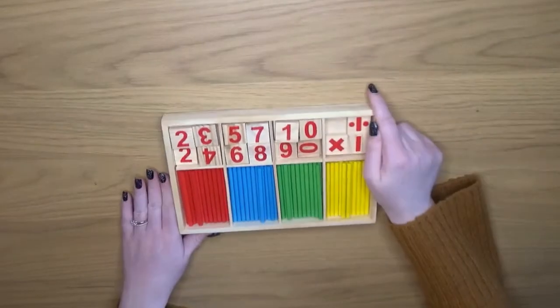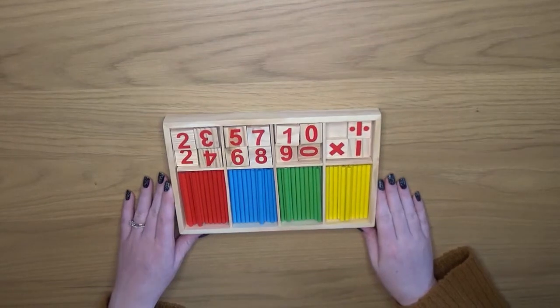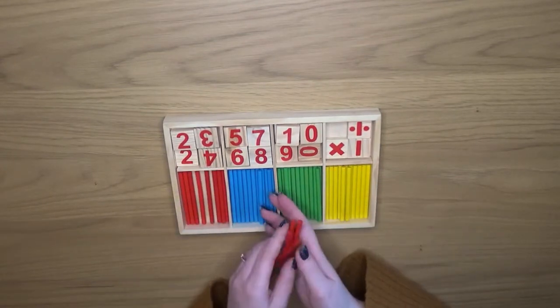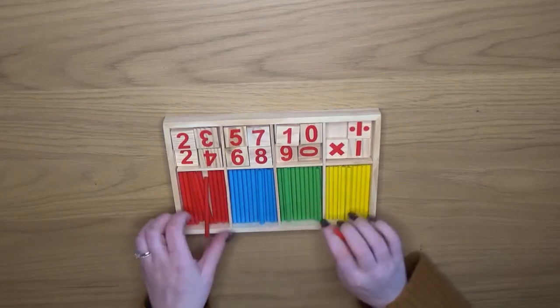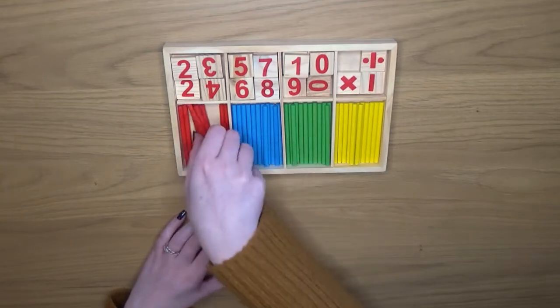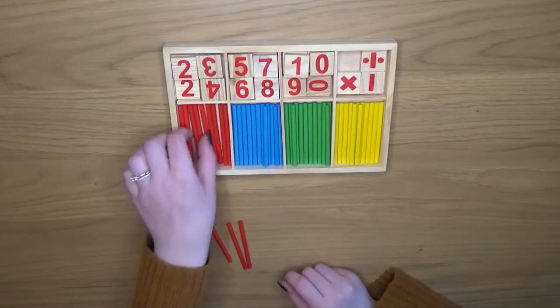If you've watched my video on my educational toys haul from Wish you might recognise this kit. There are these colourful sticks and also some numerals as well. Using the colourful sticks again is a great visual indicator of number bonds to ten.